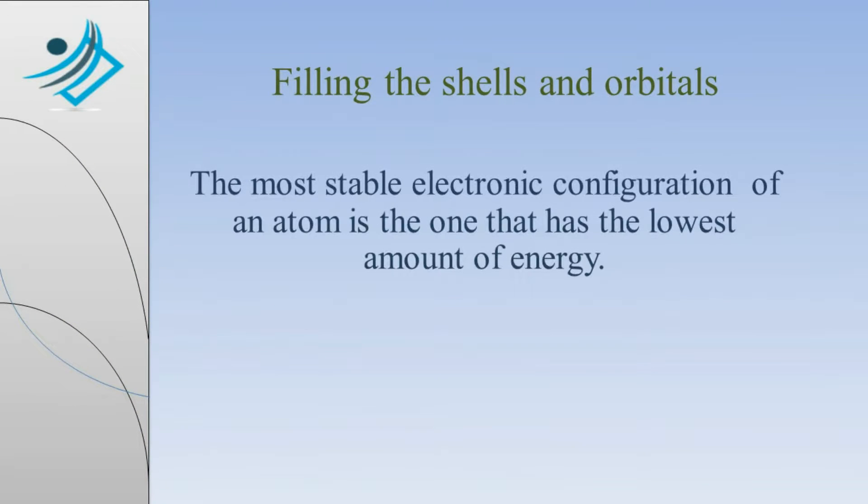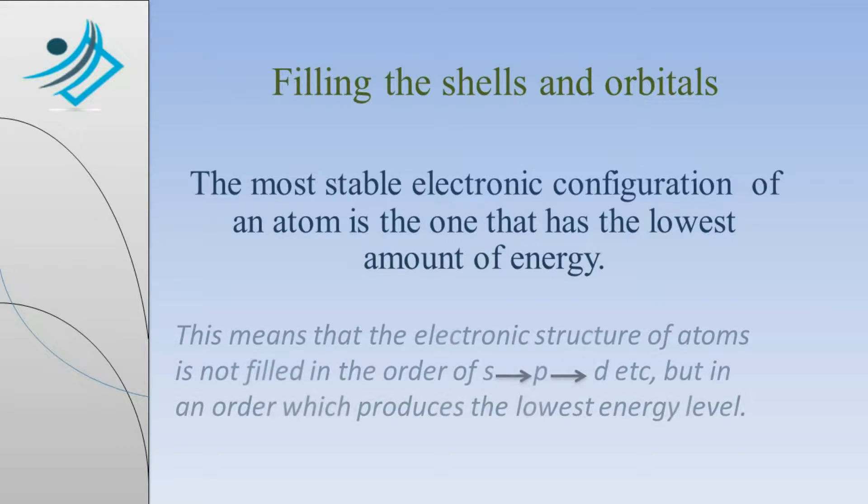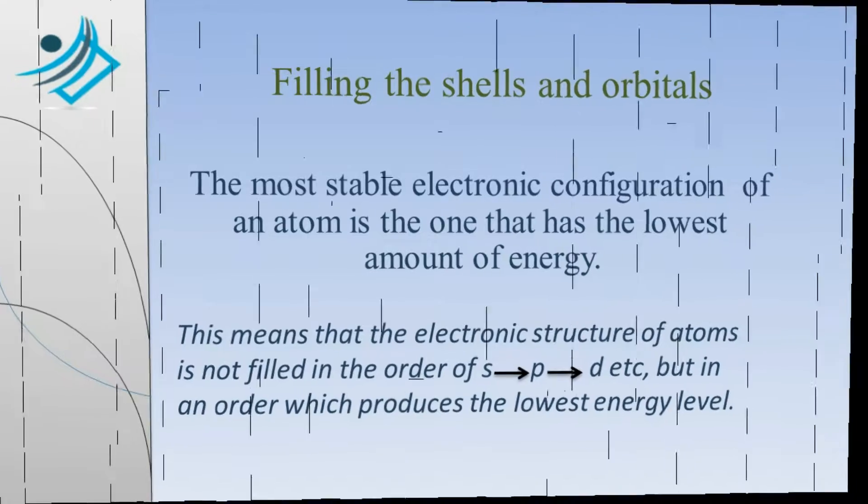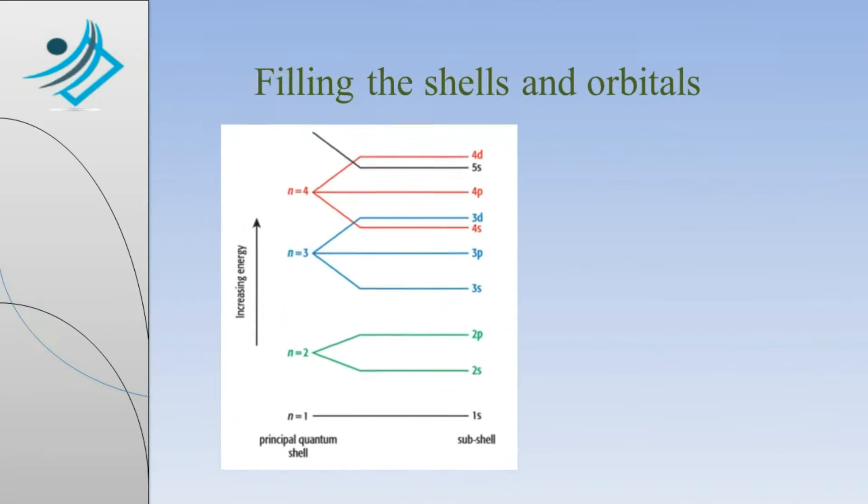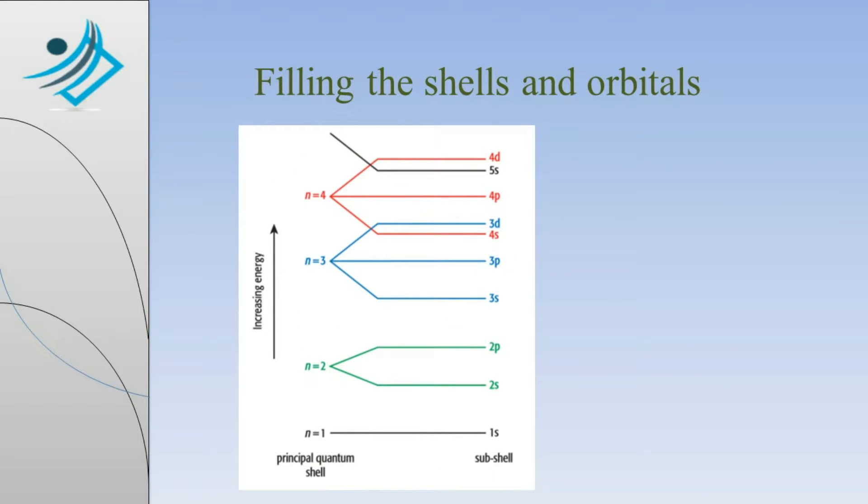Filling the shells and orbitals. The most stable electronic configuration of an atom is the one that has the lowest amount of energy. This means that electronic structure of atoms is not filled in the order of S, then P, then D, etc., but in an order which produces the lowest energy level. And the energy in each subshell depends on what type of subshell and in which energy level that subshell is present. For instance, 2P has more energy than 1S because 2P is located in higher energy level. But the 3D has more energy than 4S because this time the type played its role.